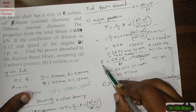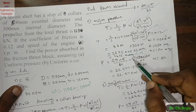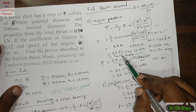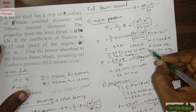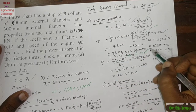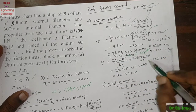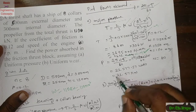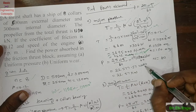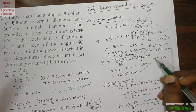Using P = 2πNT/60, with N = 80 rpm and T = 2695 N·m — remember, T must be in N·m only — we get power P = 22,577.57 W, which can be converted to kilowatts.